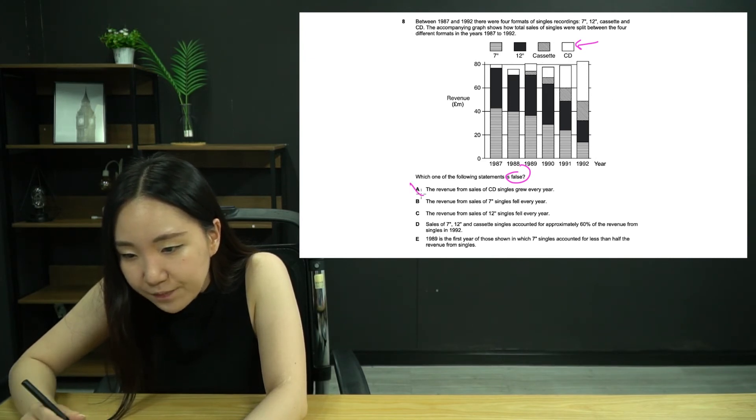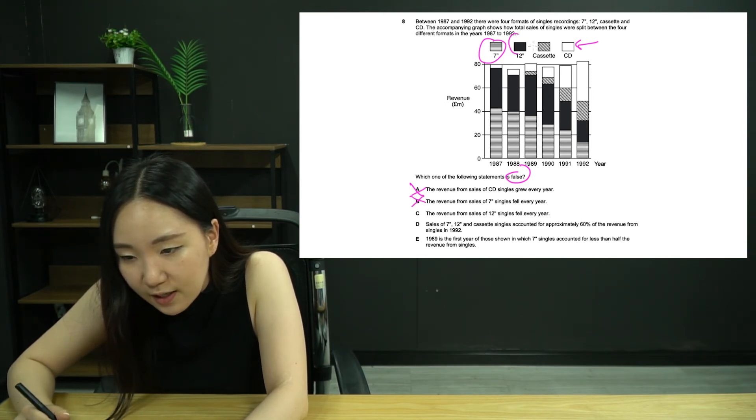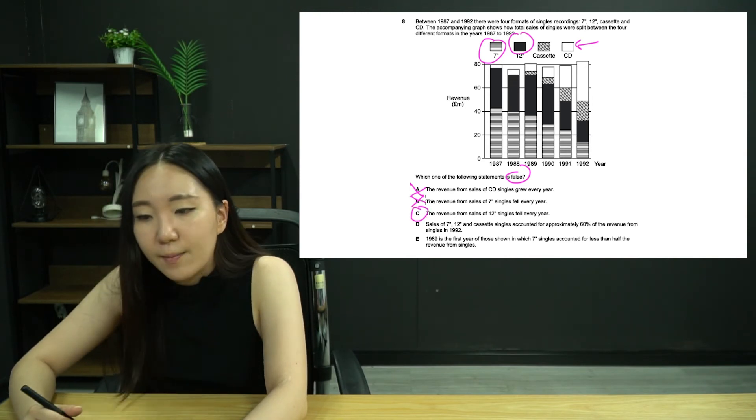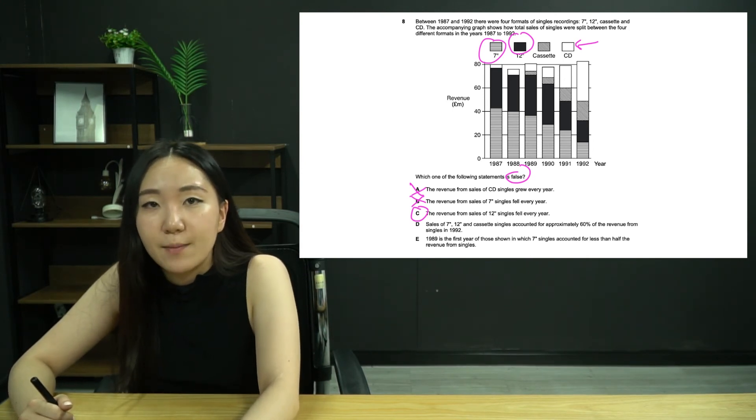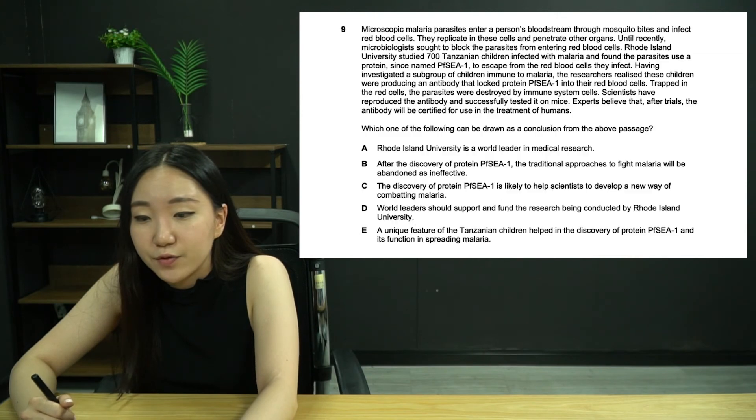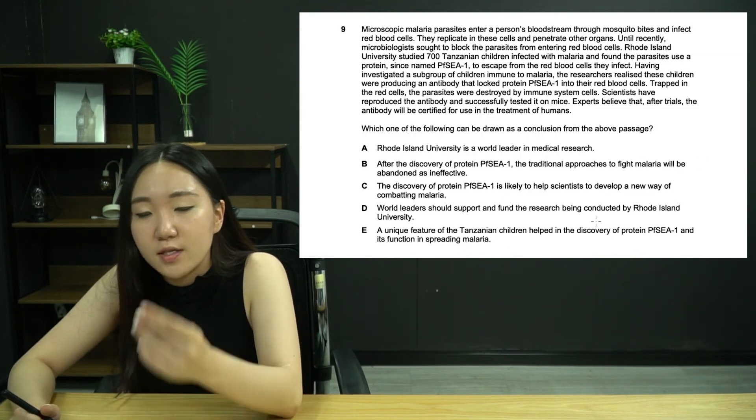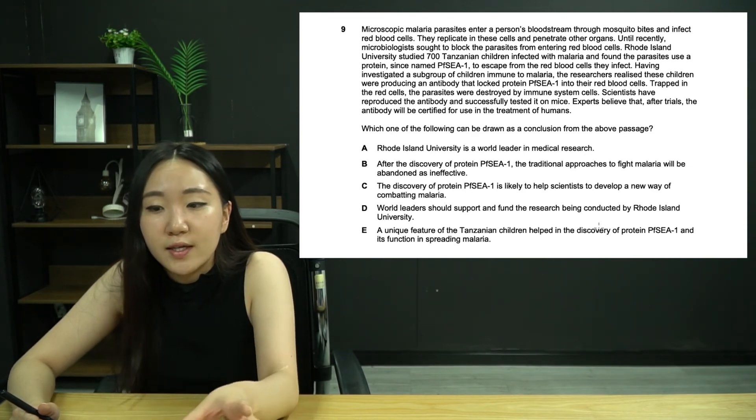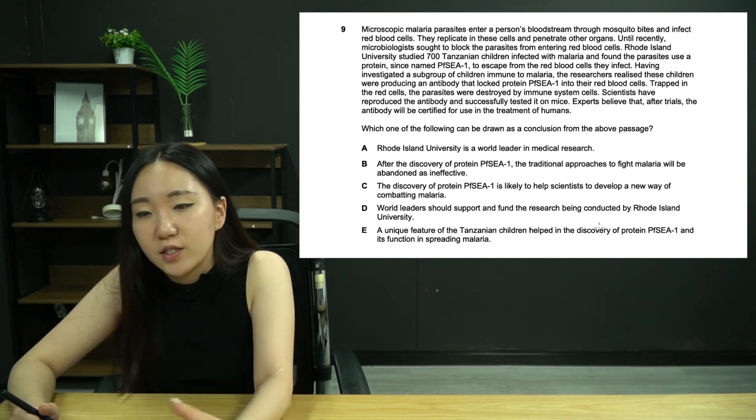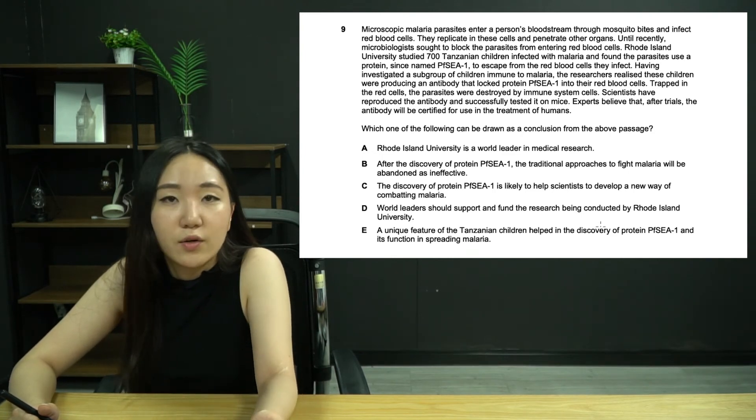Revenue from sales of seven inch, this stripy one here, fell every year. Smaller, smaller, smaller, smaller, smaller. Yep. The revenue from sales of 12 inch singles fell every year. Fell, increased. So it's C. At this point, I wouldn't even look any further. In order to save time in this exam, you need to have an element of belief in yourself, confidence that you've got the right answer. Just trust that gut and move on because there will be questions you're going to struggle with more.